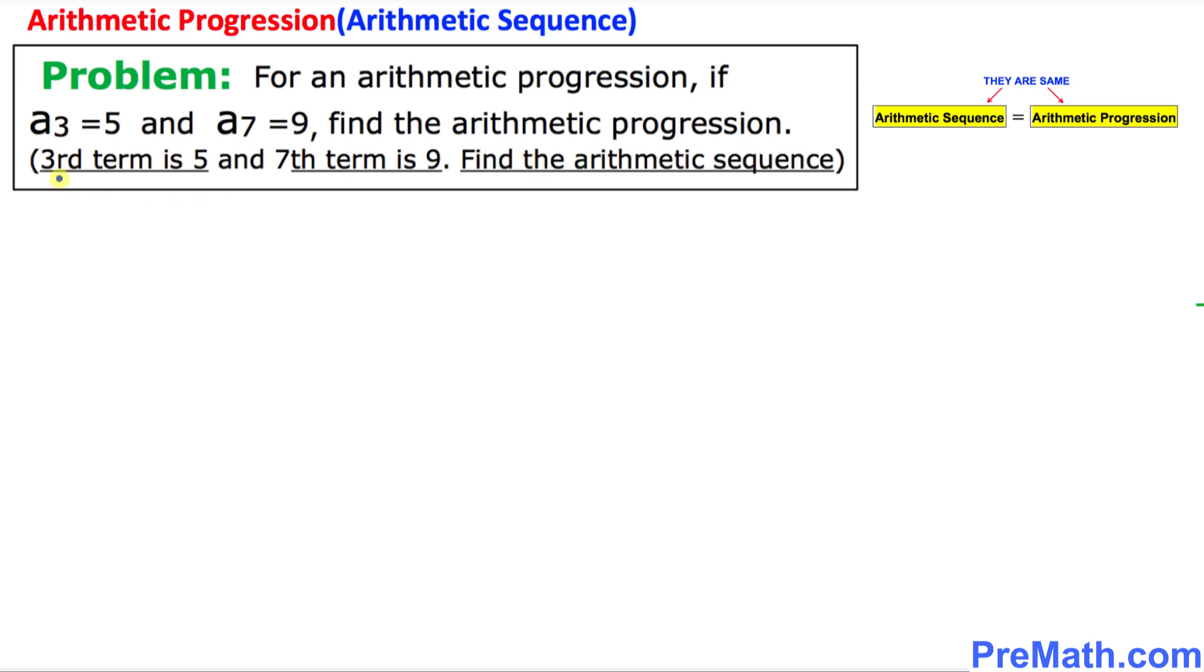So what has been given to us is a₃ = 5 and also a₇ = 9, and we want to figure out the arithmetic sequence or arithmetic progression.